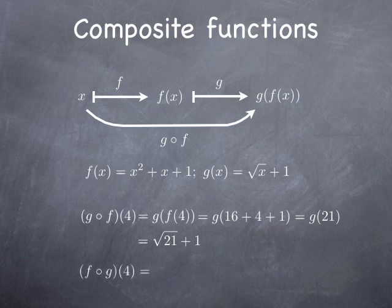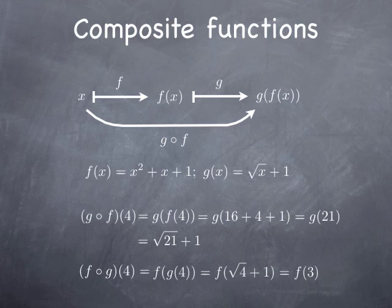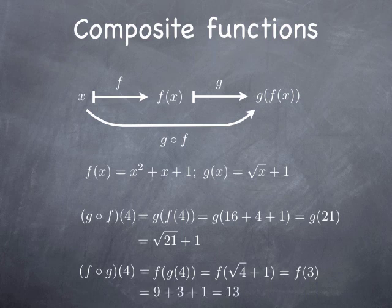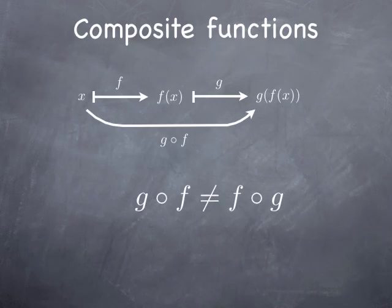Note that if we were composing the two functions in the other direction — take f of g, evaluate it at 4 — by definition it is f of g of 4, and g of 4 is root of 4 plus 1, in other words 3. So we're looking for f of 3, and if I plug 3 into f I obtain 13. It is quite obvious, and you probably know that, but it is always good pointing out the obvious sometimes: if you compose two functions in one direction or the other, there is no reason you should get the same thing.